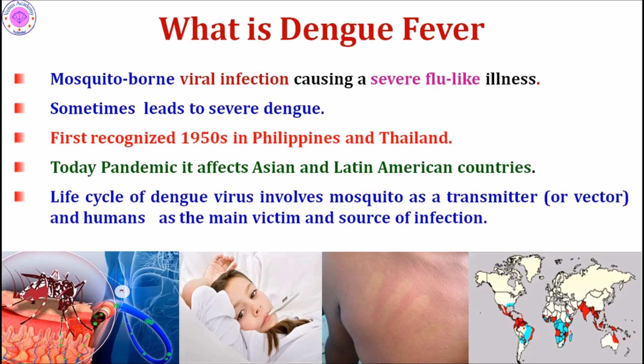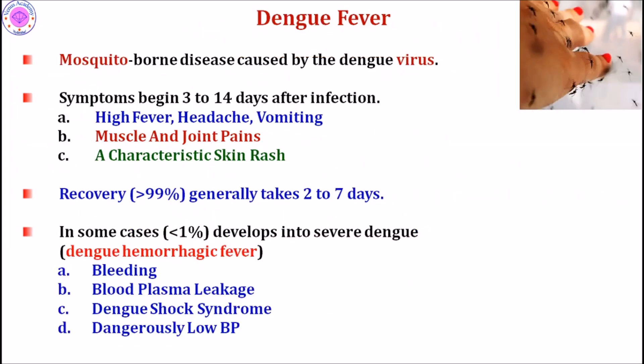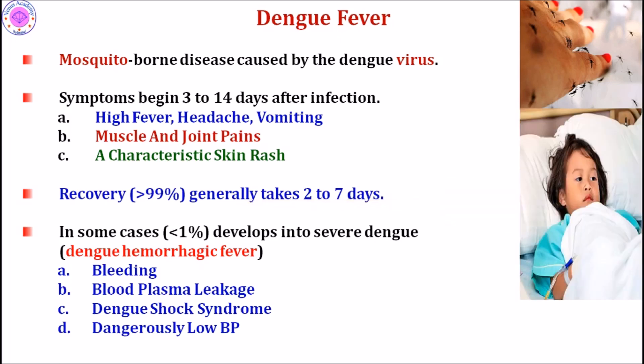Dengue fever is a viral infection transmitted through mosquito bite. Symptoms begin three to fourteen days after infection due to the incubation period — meaning after a person is bitten, the virus incubates for three to fourteen days before symptoms appear. Symptoms include high fever, headache, vomiting, muscle and joint pains, and a characteristic skin rash.